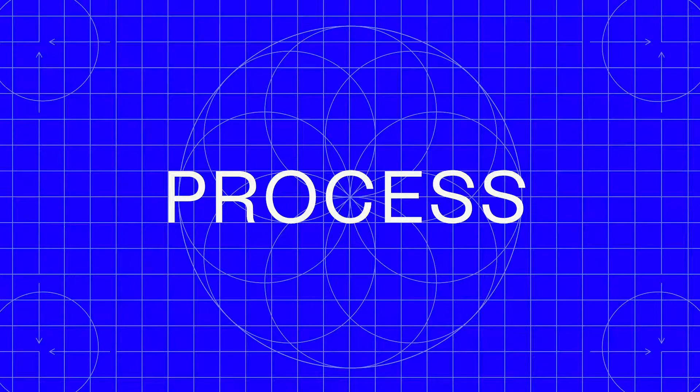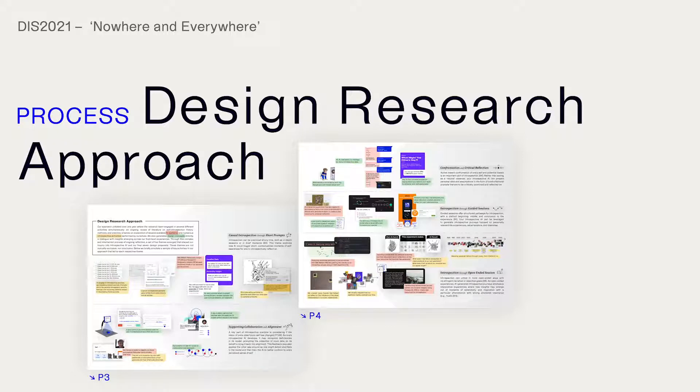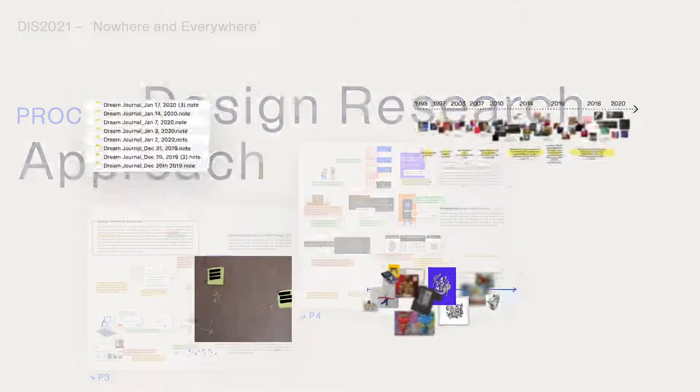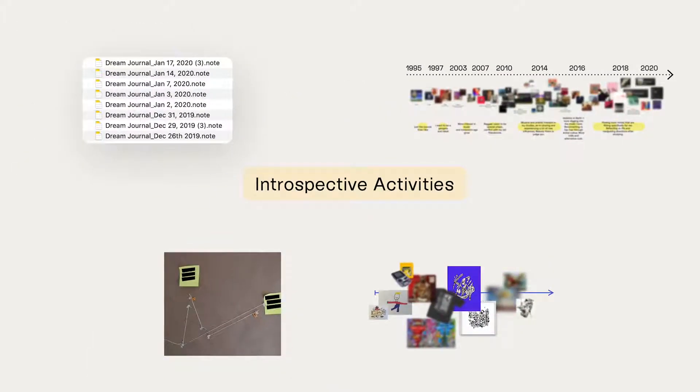To investigate those questions, we engaged in a design research process. At first, we familiarized ourselves with the practice of introspection and engaged in activities, methods and literature. We wrote and analyzed dream journals, created vision boards that helped to frame future desires, created canvases that helped to reflect on life and surface emotions tied to our personal archives.